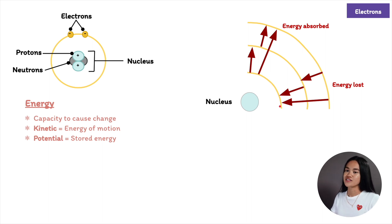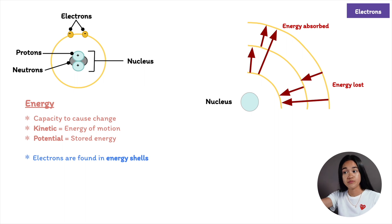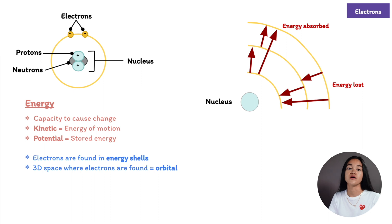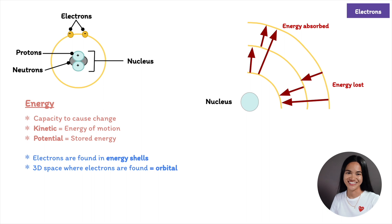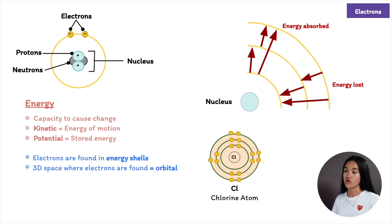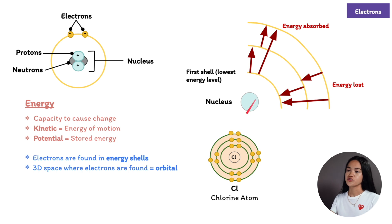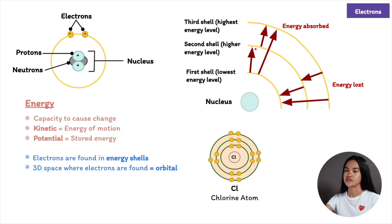Electrons are found in different electron shells. The 3D space where an electron is found most of the time is called an orbital. Electron shells, or orbitals, describe the region of space around the nucleus where an electron is present most of the time, and are also called energy levels because electrons contain energy. We can represent shells as concentric circles. The first shell is closest to the nucleus and electrons there have the lowest potential energy. Electrons in the second shell have more energy, and electrons in the third shell possess even more energy.